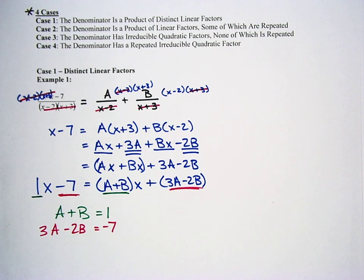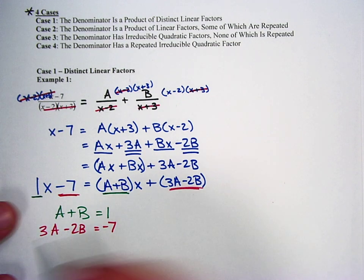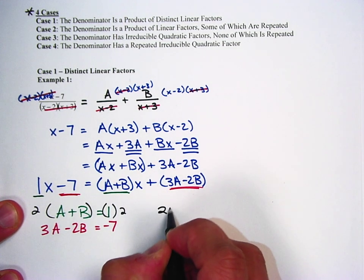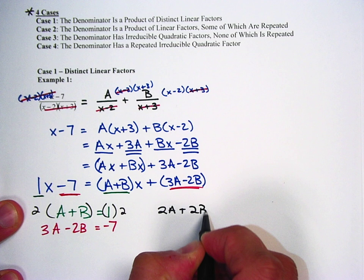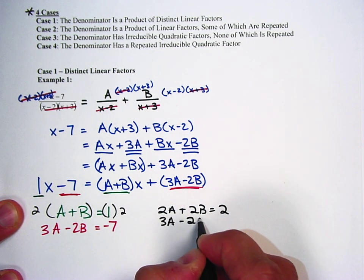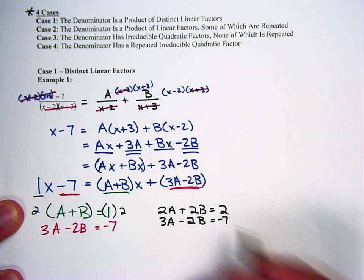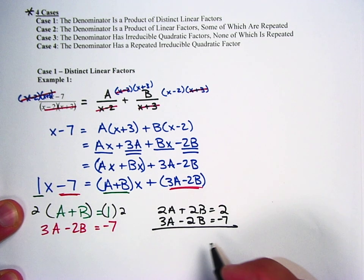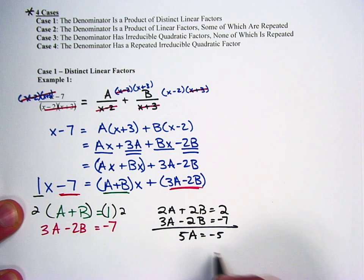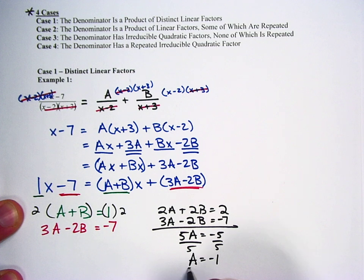Now to solve for A and B, we did that all last chapter. Just go ahead and multiply the top by 2. Get 2A plus 2B equals 2. 3A minus 2B equals negative 7. The B's would cancel, and I get 5A equals negative 5. Divide by 5, divide by 5, A equals negative 1.